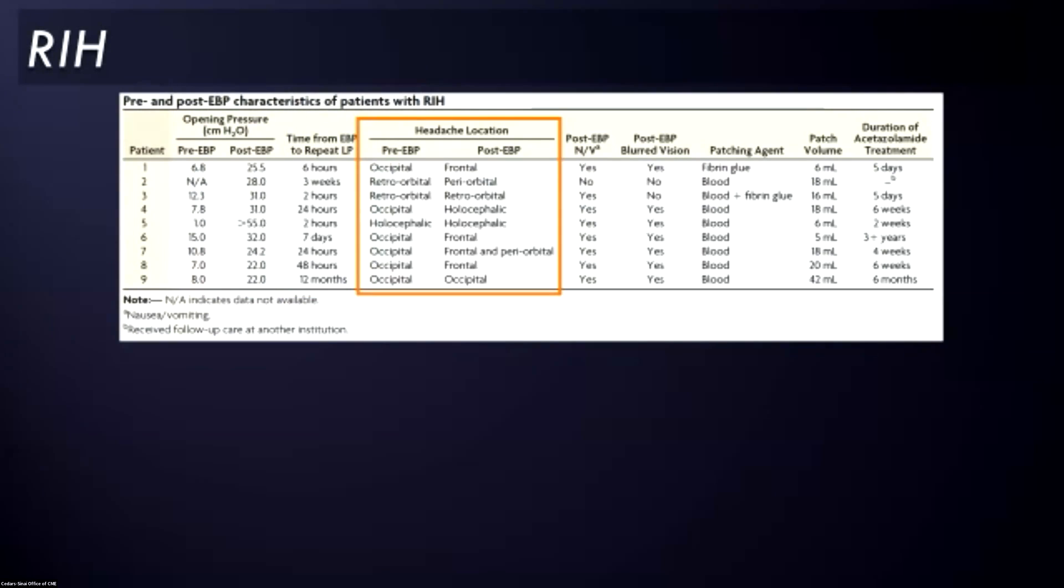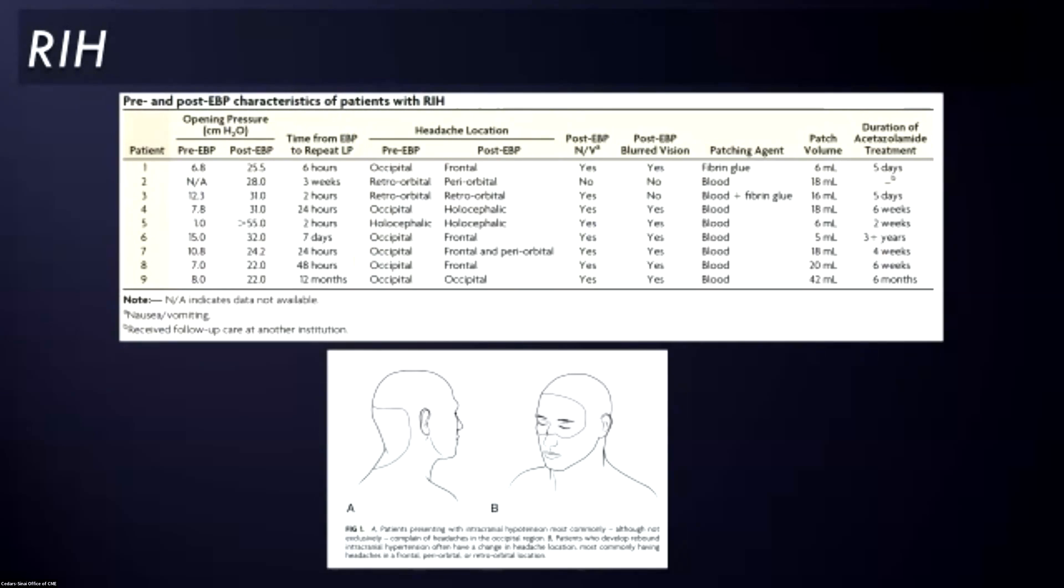Most of these patients also noticed a change in their headache pattern. SIH headaches are most commonly posterior or occipital in nature, although by no means is that always true, whereas the headaches associated with rebound high pressure, there was most commonly a shift, often to either holocephalic or frontal. A lot of patients describe pain around their orbits, or they'll say it feels like it's deep behind their eyes. It's a very common complaint. At least one patient did not feel a change in their headache location. These are the schematic representations of where people usually feel either SIH type headaches on the left or rebound high pressure headaches on the right. Again, these are stereotypes. They're not going to be true in every situation.